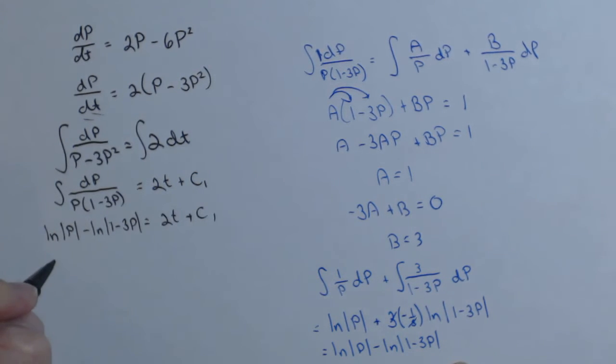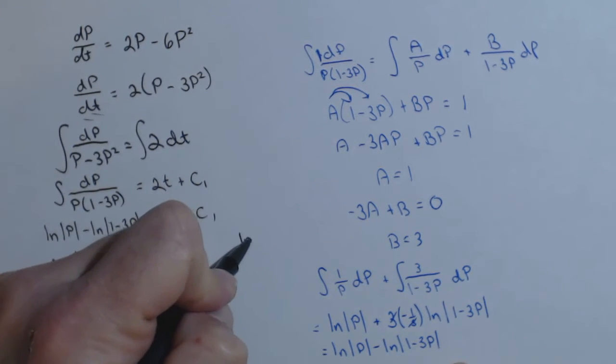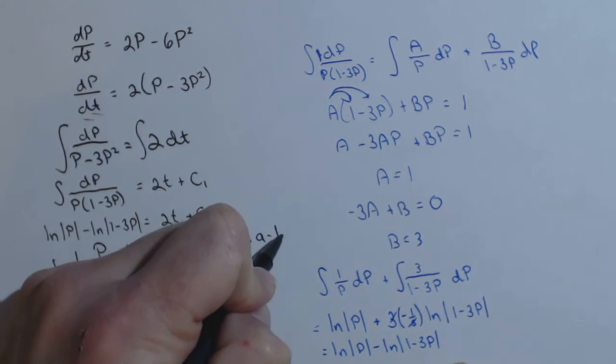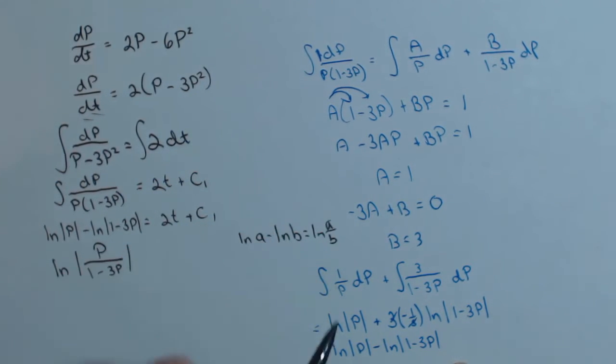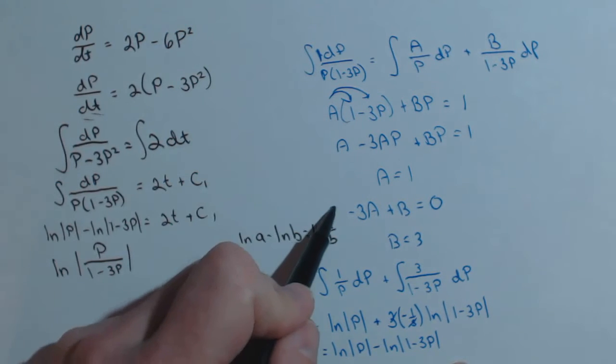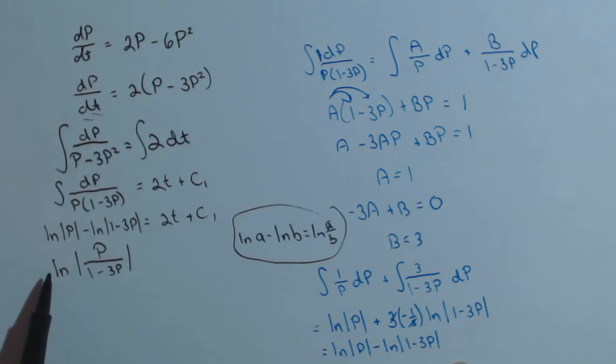Well, what we're going to need to do is use a property of logs to rewrite this left-hand side as a single log. So this becomes ln, the absolute value of p over 1 minus 3p. So pulling something out of college algebra, which looks like this, ln of a minus ln of b equals ln of a over b. So we had to use that property there to rewrite this, equals 2t plus c1.